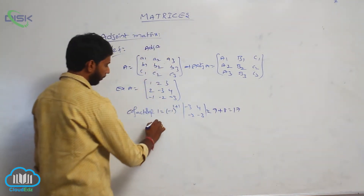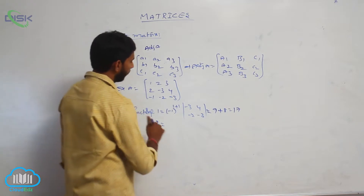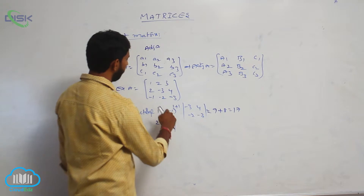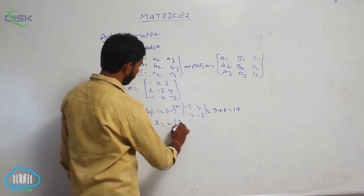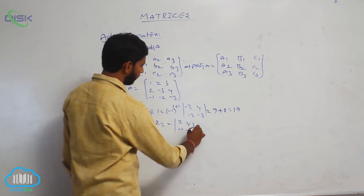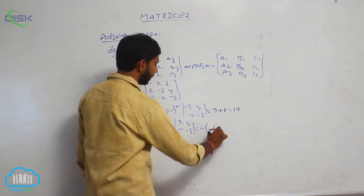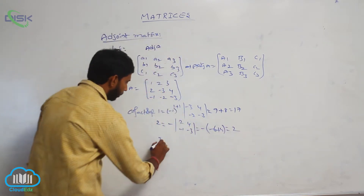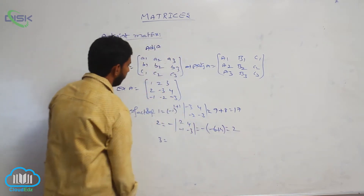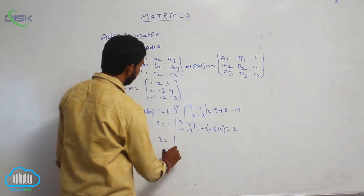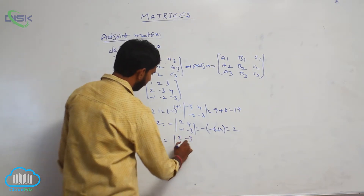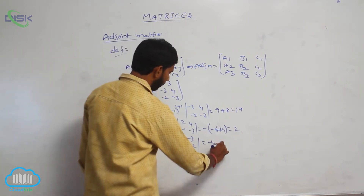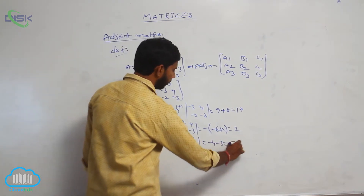Cofactor of 2 is equal to minus of the determinant of [2, 4; minus 1, minus 3], which is minus of (minus 6 plus 4), equal to 2. Cofactor of 3 is the determinant of [2, minus 3; minus 1, minus 2], equal to minus 4 minus 3, that is minus 7.